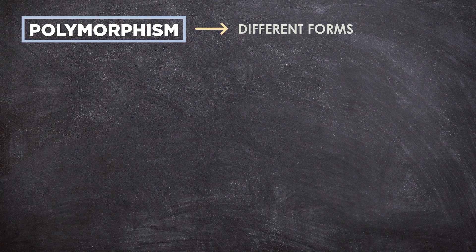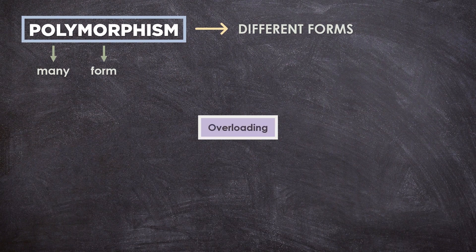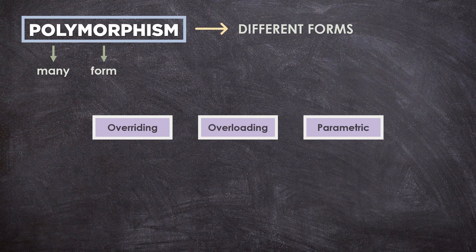Polymorphism. Polymorphism means that one operation can be used for different purposes. Poly means many and morph means form. For instance, Java supports different kinds of polymorphism like overloading, overriding, and parametric.